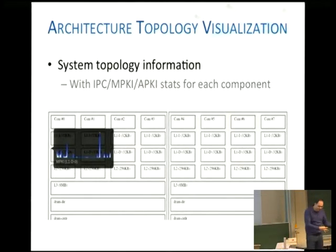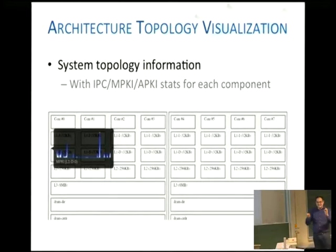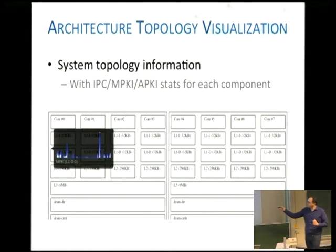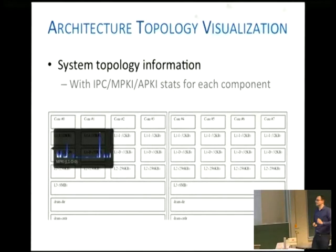First we have performance analysis of the application, but we also have a view of the system — what does the system we're simulating look like? This is automatic topology generation showing all the micro-architectural structures: the different levels of cache, the L2 cache, the shared L3, and the DRAM. If you mouse over one of these components, it shows you a sparkline of the activity for that component over time. You can look at the different components and do comparisons to see how the application is using your micro-architecture.